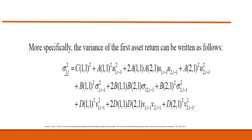Now let's interpret this equation. The squared terms in this equation — such as A_{11}^2, A_{21}^2, B_{11}^2, B_{21}^2 — always positively affect the asset return variance in the next period, because squaring any coefficient always yields a positive value.